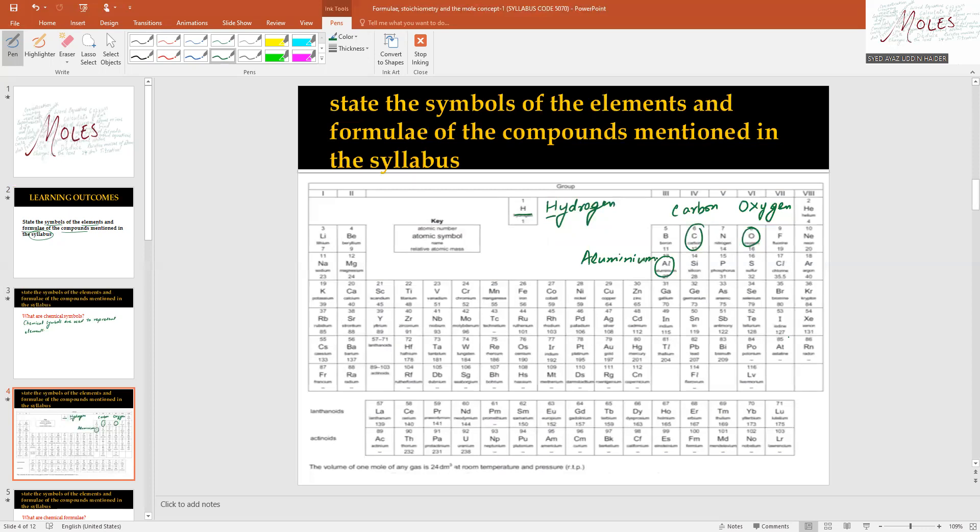Some elements have names and symbols that are different. For example, sodium has the symbol Na, which comes from its Latin name. Potassium has the symbol K from its Latin name. Copper has the symbol Cu.